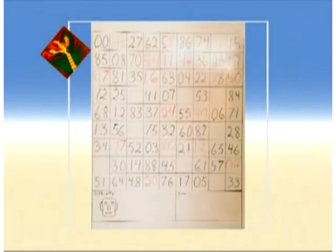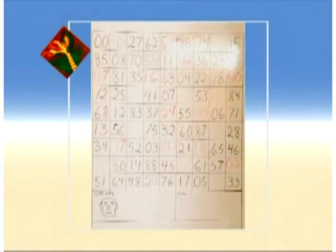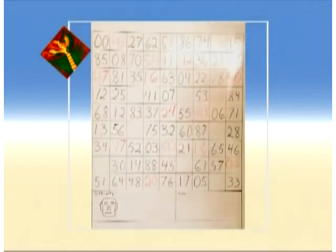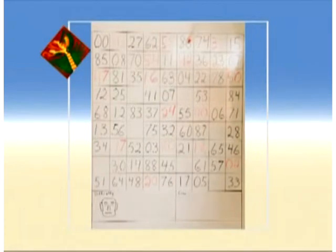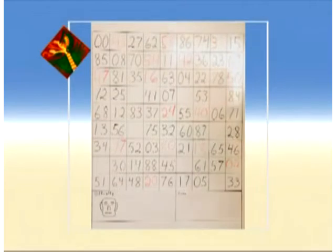Now we go to this blank on this row. We start with the left number — we see we already have 1, 7, 8, 5, 6, 2, 4, 0. We are missing a 3. Now we go to the right number and we see we have 5, 4, 6, 8, 2, 7, 3, and 0. We are missing a 1.